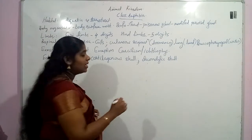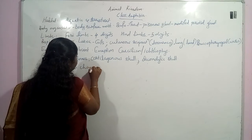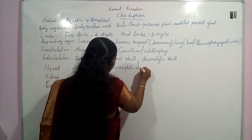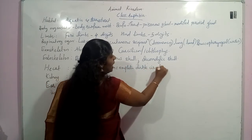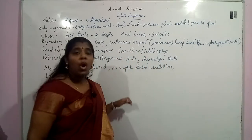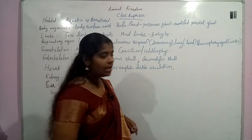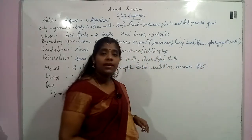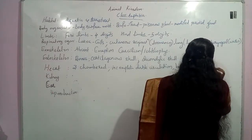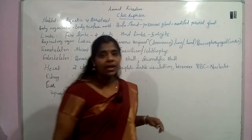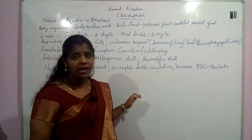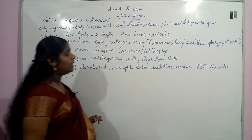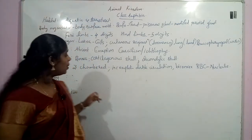The heart of this organism is three-chambered. They undergo incomplete double circulation. Their RBC is biconvex in type; RBC will be large in size and nucleate — they have a nucleus in the RBC, unlike mammals where RBC lacks a nucleus.